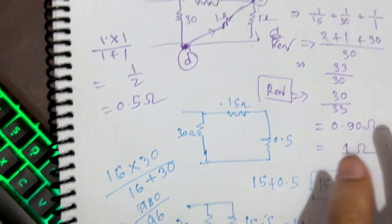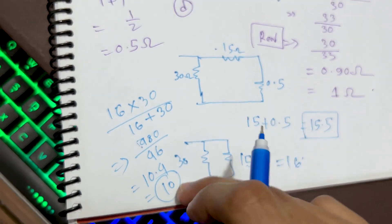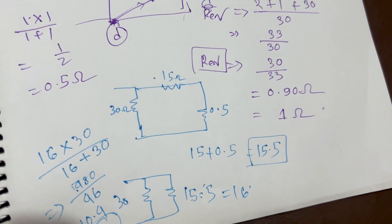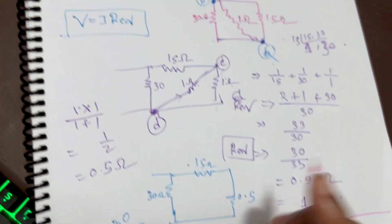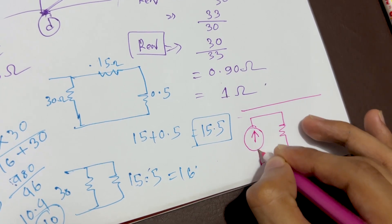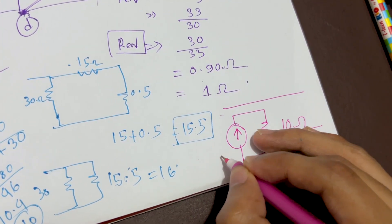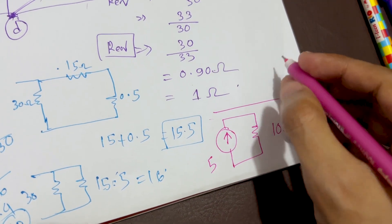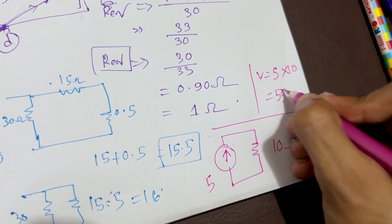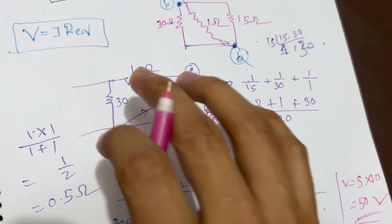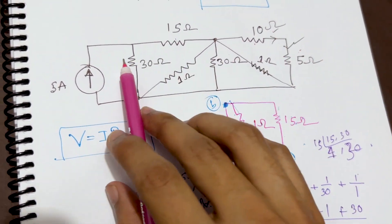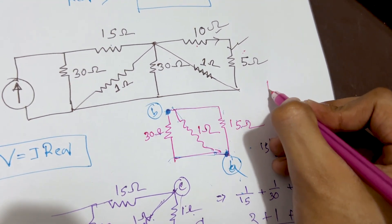The result of 10.4 ohm we approximate as 10 ohm for simplicity. So the final equivalent circuit has only one equivalent resistor of 10 ohm. With current I = 5 ampere, the voltage is V = I × R = 5 × 10 = 50 volt. The entire circuit is equivalent to just this 10 ohm resistor.